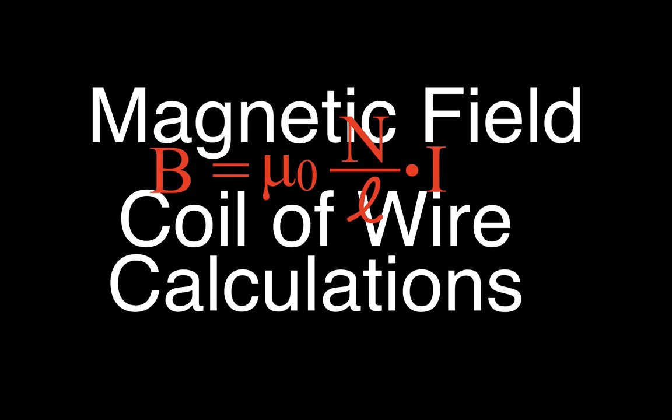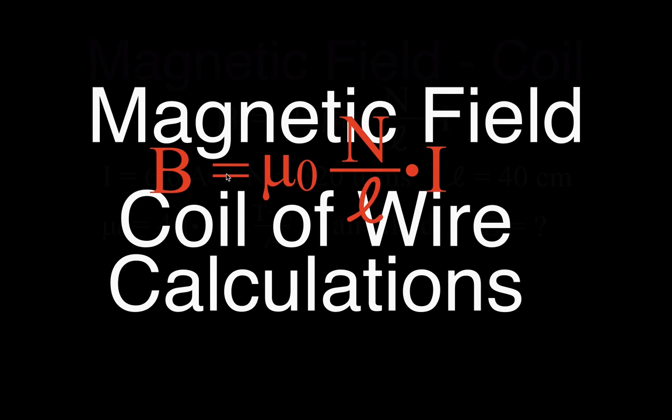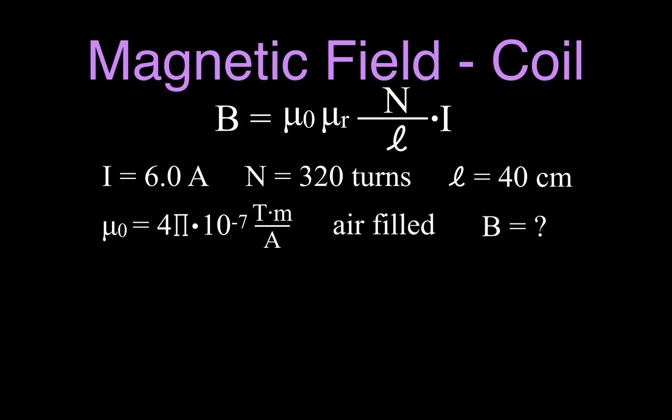In today's video, I'm going to go over some relatively straightforward calculations for determining the magnetic field inside of a coil. In a previous video, I went over an explanation of how the magnetic field in a coil works, and you can link to that in the upper right hand corner of this video. But for now, we're just going to do some relatively straightforward calculations.